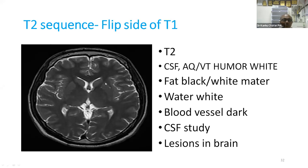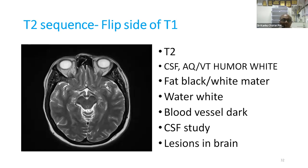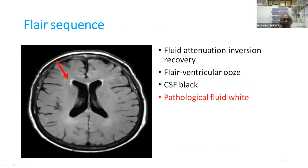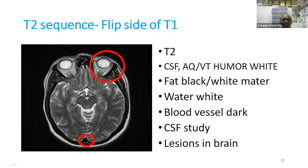T2 sequence is the flip side of T1 — where water was dark in T1, in T2 water is brighter. All CSF areas including the aqueduct and vitreous look brighter, but blood vessels look darker. You can see blood vessels darker in the posterior part and aqueduct and vitreous looking brighter.